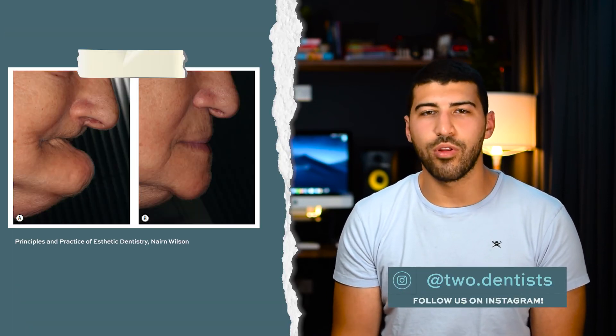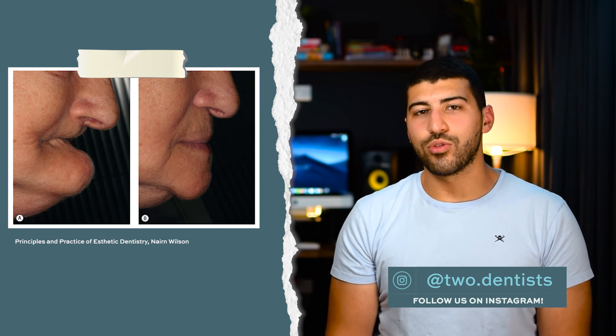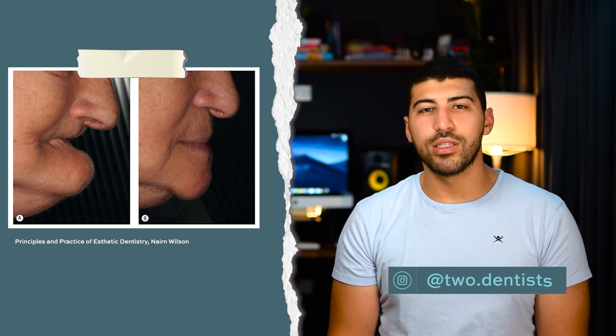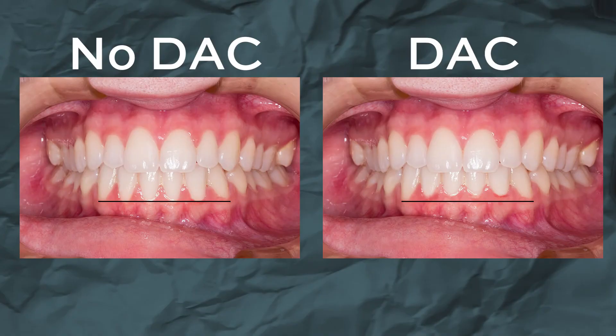If the tooth surface loss by attrition is extensive and rapid, you should expect to see a reduction in the OVD, so the patient would look over-closed. You wouldn't see this if the tooth wear was gradual because dental alveolar compensation will maintain their OVD. Dental alveolar compensation is the process where alveolar bone remodels and elongates to compensate for the loss of vertical dimension. For example, you can see the difference in these photos — in the photo with no dental alveolar compensation the gingival margins of all the lower incisors are in one straight line, whereas in the other photo the lower incisors are at a higher level compared to the canines, with an increased width of the attached gingiva.